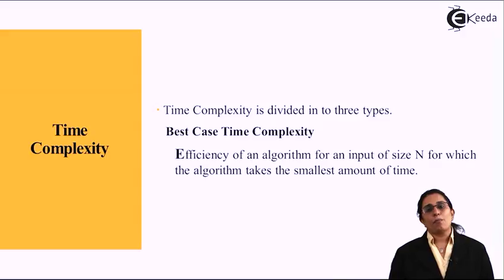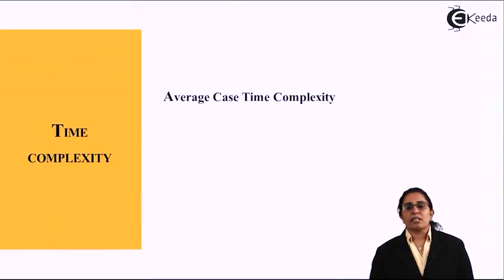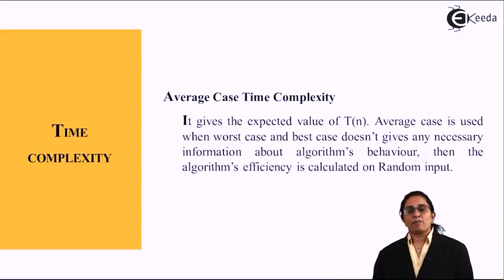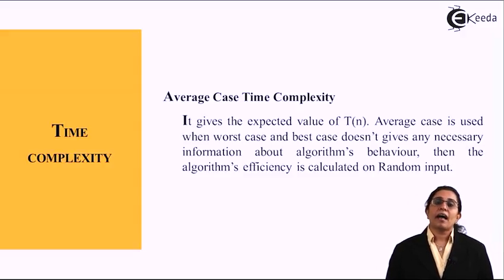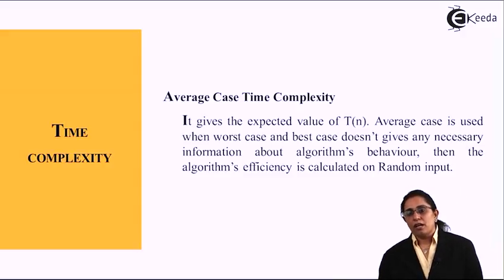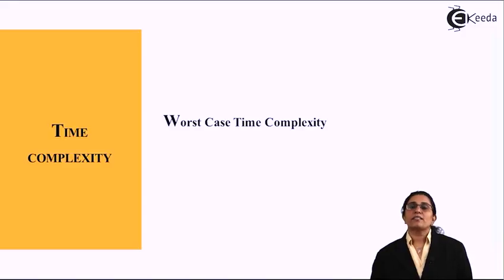The average case time complexity is defined as the expected value of T(n). Average case is used when the worst case and the best case does not give any necessary information about the algorithm behavior. Then the algorithm efficiency is calculated on random input.